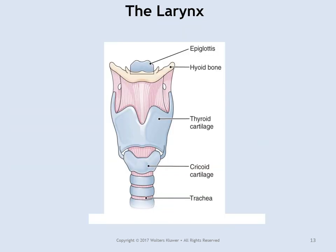Let's take a closer look at the larynx. The epiglottis prevents food from entering the trachea. You have the hyoid bone directly below the epiglottis, thyroid cartilage right in front of the thyroid gland, and cricoid cartilage directly below that. The trachea has C-shaped rings around the front that don't close all the way around.